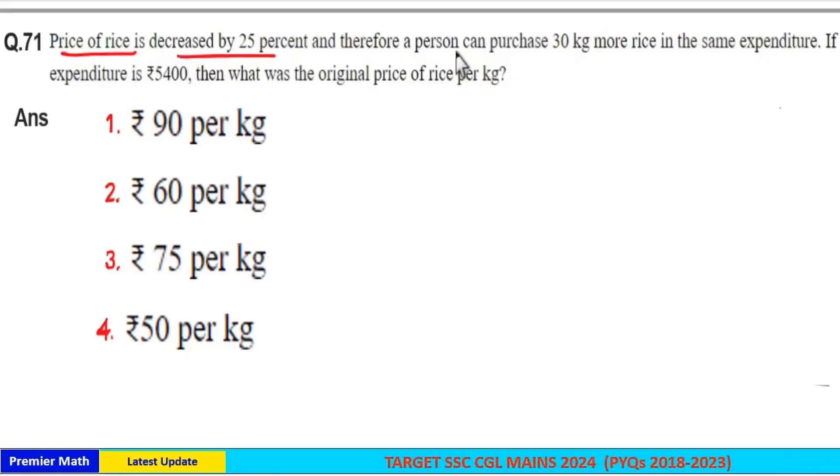The price of rice decreased by 25% and therefore a person can purchase 30 kg more rice in the same expenditure. If expenditure is Rs. 5400, what was the original price of rice per kilogram?